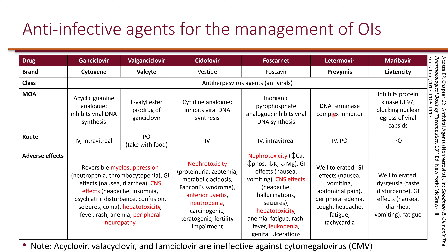Letermovir has a unique mechanism of action: it is a DNA terminase complex inhibitor, targeting a process unique to the virus needed for processing and packaging of viral DNA. Since no mammalian cells have this DNA terminase, it has limited adverse effects, including less myelosuppression, and is generally well tolerated. It is available as IV and PO. There is no cross-resistance with other antivirals. GI effects such as nausea, vomiting, headache, fatigue, and tachycardia can occur.